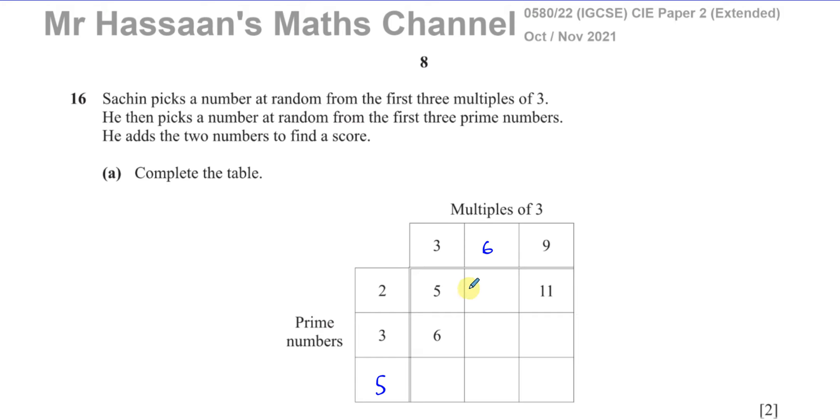We complete the table by finding the sums. 2 plus 3 is 5, 2 plus 6 is 8, 3 plus 6 is 9, 9 plus 3 is 12, 3 plus 5 is 8, 6 plus 5 is 11, and 5 plus 9 is 14. That's two marks for completing the table.